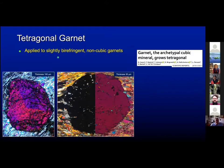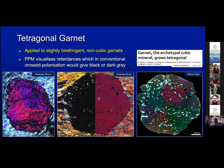The first example comes from tetragonal garnets we have been studying recently. In order to reveal the slight birefringence of these tetragonal garnets, we need to make thick sections — in this case 100 microns — and with a regular thickness we do not see almost anything. With PPM on the same garnet, we are able to visualize nicely, with different colors depending on different orientations of the sectors, this sector zoning in areas where cross-polarization would give us black colors.